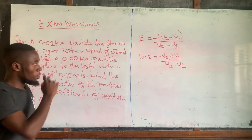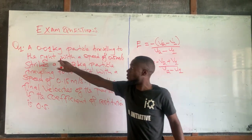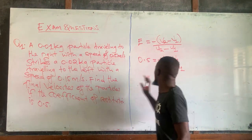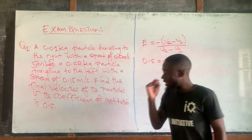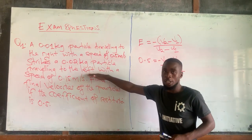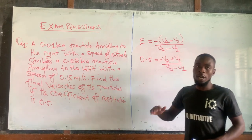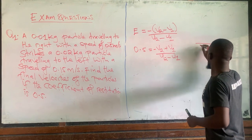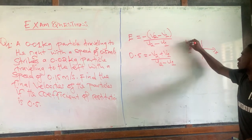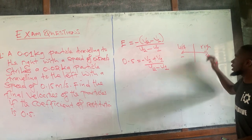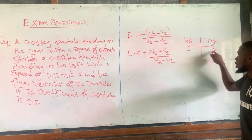The trick here is: any particle travelling to the left will have a negative speed, and the particle travelling to the right will have a positive speed. On the x-axis, positive is to the right and negative is to the left. So particle 2 travelling to the left has a negative speed, and particle 1 travelling to the right is positive.